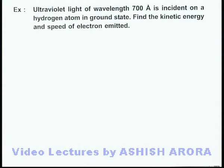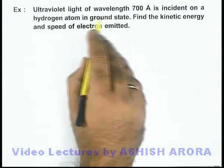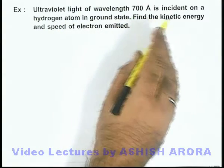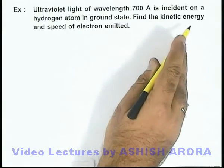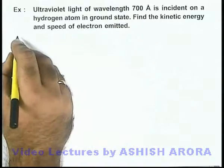In this example, we are given that ultraviolet light of wavelength 700 angstrom is incident on a hydrogen atom in ground state, and we are required to find the kinetic energy and speed of the emitted electron.